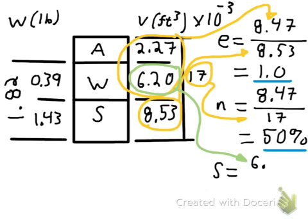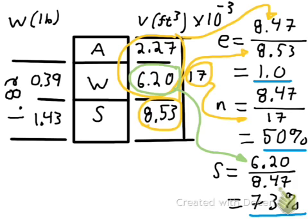Next we calculate the degree of saturation, which is the volume of void space filled with water divided by the total void space: 6.2 divided by 8.47, which gives 73%. Note that in all these ratio calculations, the 10⁻³ factor was omitted because it appears on both the top and bottom and cancels out.